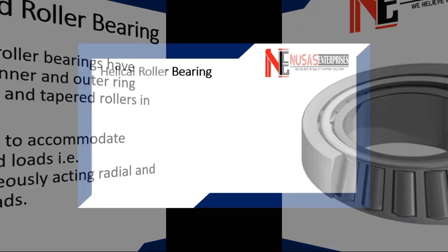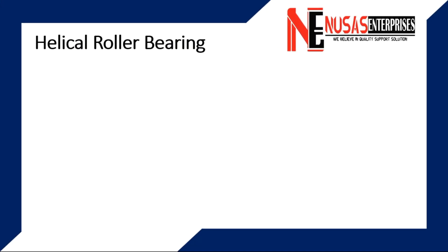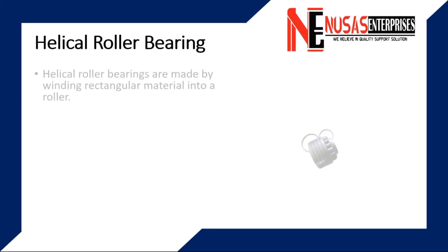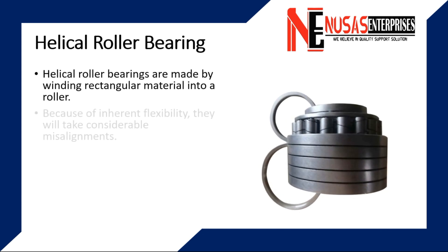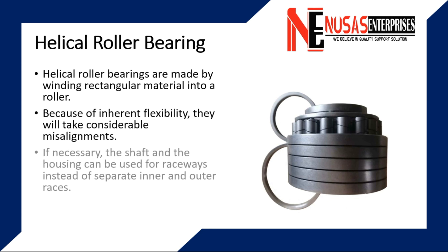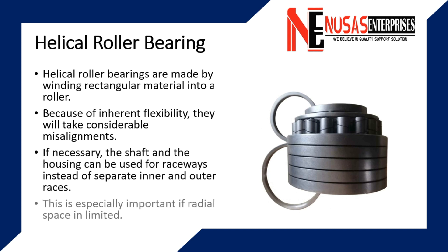Helical roller bearings are made by winding rectangular sheet into a roller. Because of inherent flexibility, they will take considerable misalignments. If necessary, the shaft and the housing can be used for raceways instead of separate inner and outer races. This is especially important if radial space is limited.